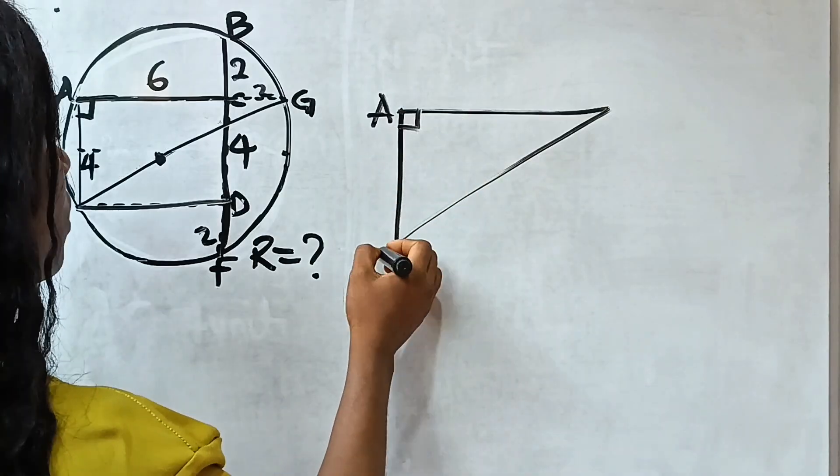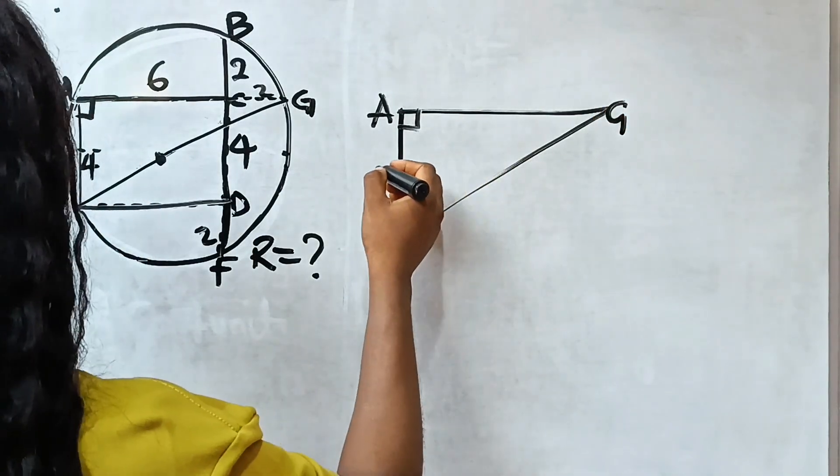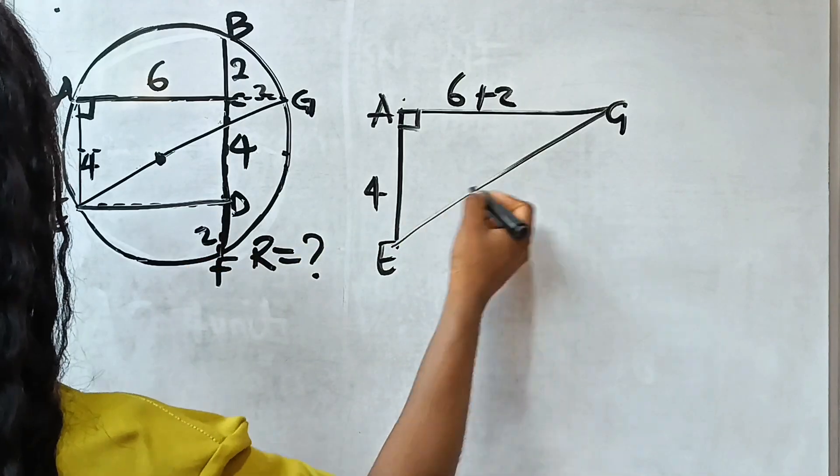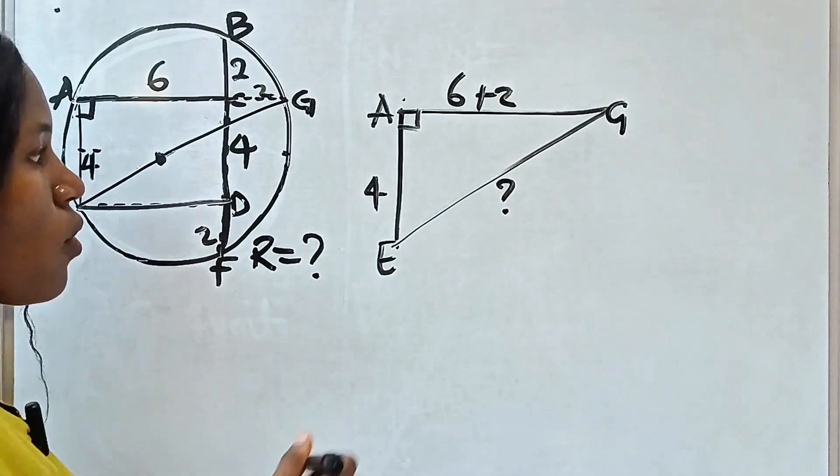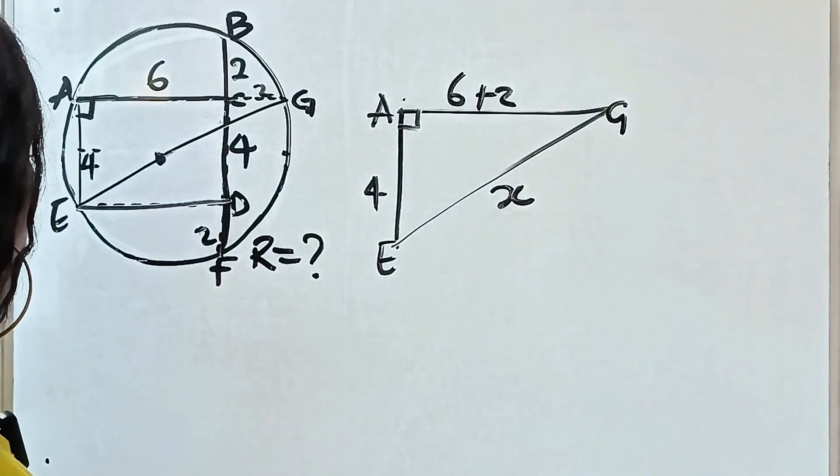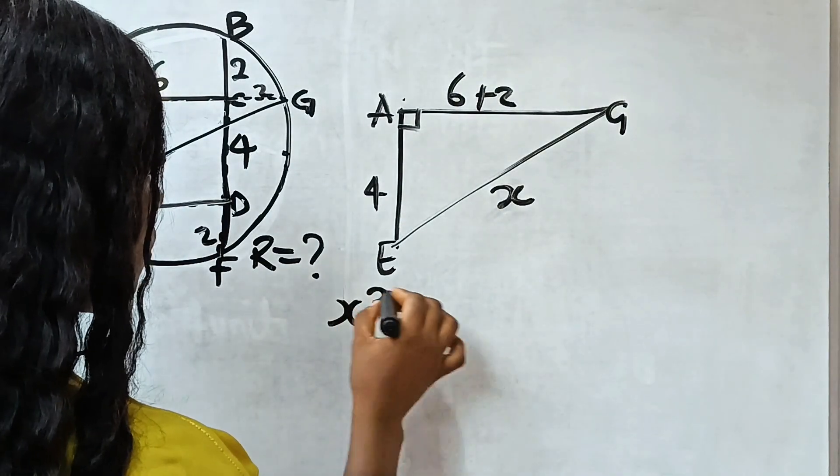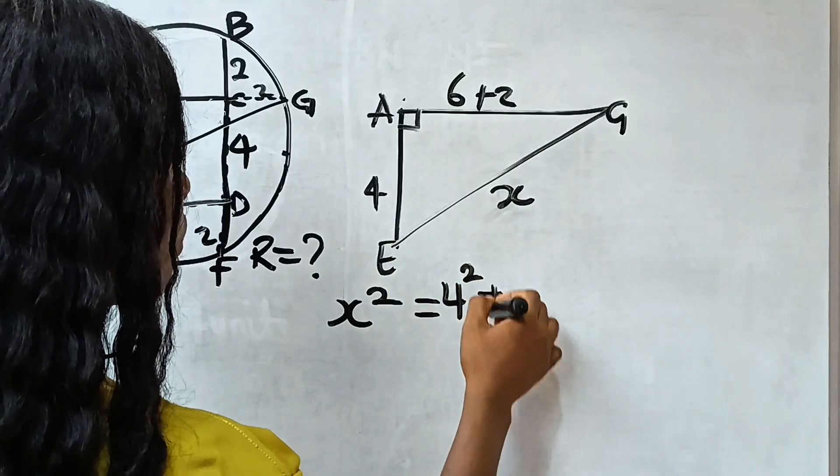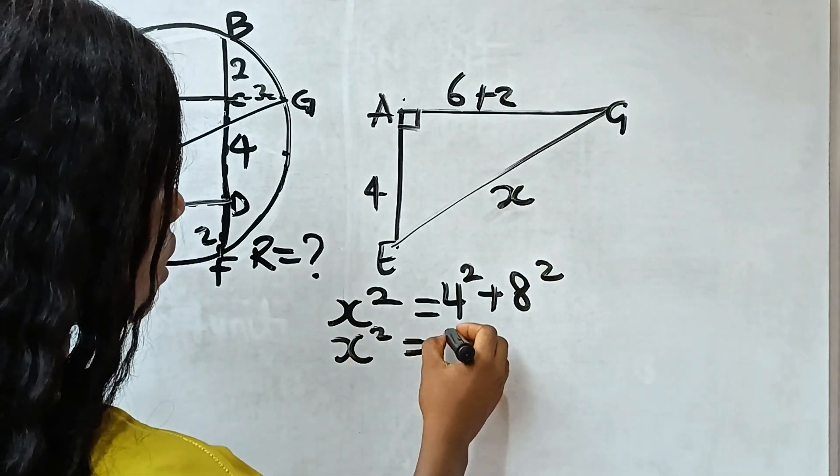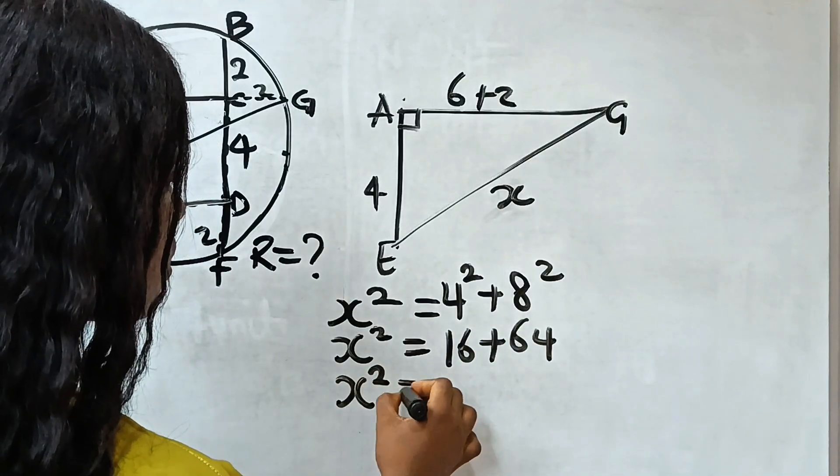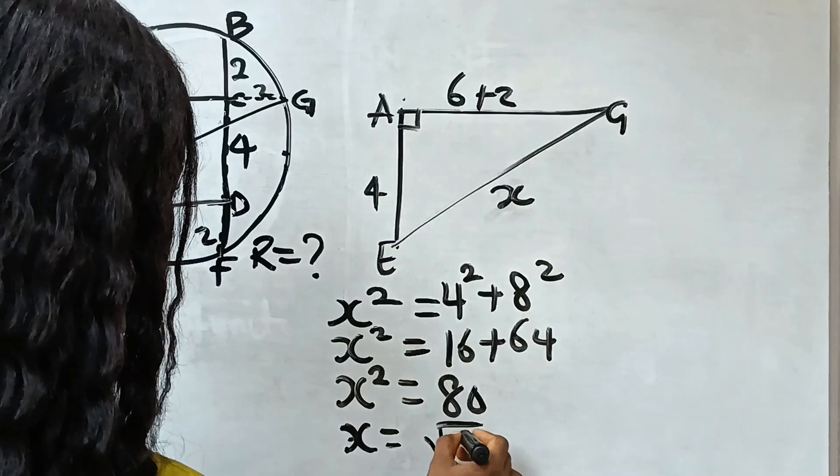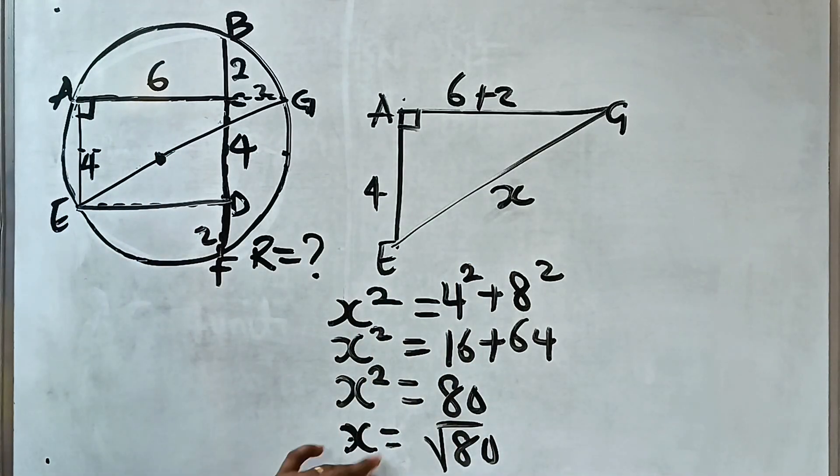This is A, right angle. This is E, and this is G. AE is 4. AG is 6 plus 2, this 6 plus this 2. And EG is what we don't know. Let's call EG X. Now, using the Pythagorean theorem, we know that X squared should be equal to 4 squared plus 8 squared. X squared should be equal to 16 plus 64, which equals 80. So X is equal to square root of 80.